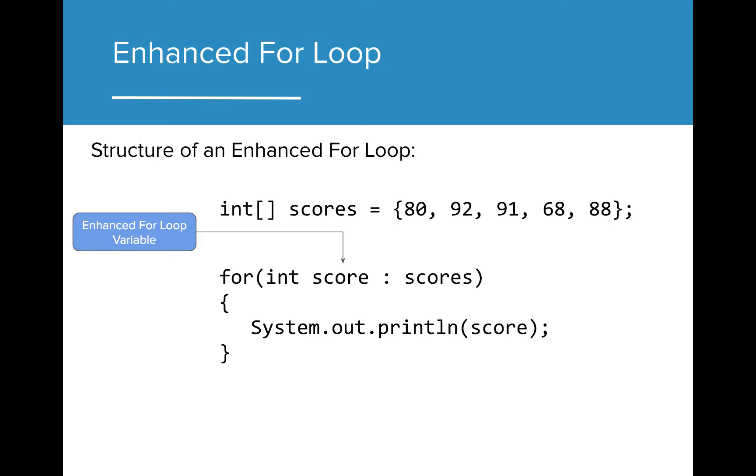Instead of initializing a variable for looping, the enhanced for loop header initializes a new variable known as the enhanced for loop variable. The type of the variable needs to match the type of the values in the array. In this example, since scores is an array of integers, score also needs to be an integer.